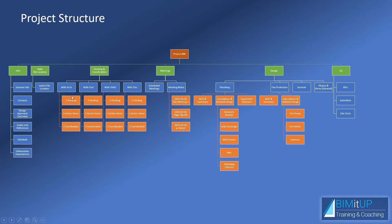You have pending items where you're waiting on information from another party; once received, it becomes an action item for yourself or your team; and once acted on, it becomes a coordinated item. Similar workflow for civil, HVAC, electrical, and other trades. For meetings, you record your meeting schedule — for example, every Tuesday at 3 PM — and keep meeting notes grouped by date and description, such as February 2nd design development page flip.